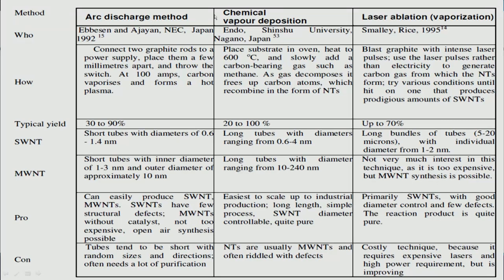In the arc discharge method, two graphite rods are connected to a power supply and placed a few millimeters apart, which produces carbon nanotubes. The yield is 30 to 90%, and you get short tubes with a diameter of 1.4 nanometers. Advantages include easy production of single wall nanotubes with few structural defects — good for functionalization — and multi-wall nanotubes can be made without a catalyst. It is also not an expensive method.